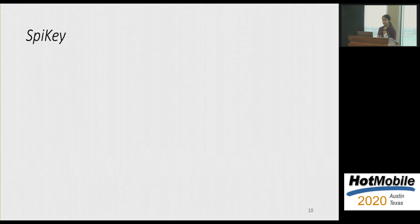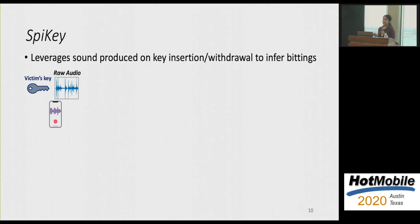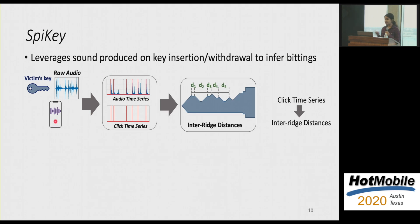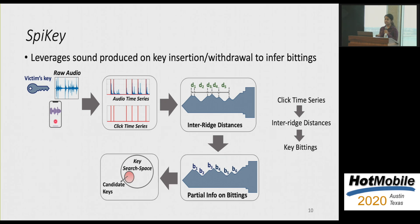So far, I've kind of explained to you how the lock works and what really causes the sound when the key is being inserted. So now we kind of switch gears and show how we can make use of the sound that's being generated to actually infer the secret of the key or the key bittings. So this is where I introduced to you our work, which is SpiKey. So the basic design of SpiKey is as follows. So what you do is you first capture the audio recording of a particular victim's key insertion. And from this, you extract a series of clicks that you can detect on the audio time series. From that, we find out what we call is the distance between ridges, which is the inter-ridge distance of the ridges in the key. And this can kind of give us partial information about the bittings, which are the secrets in the key. With this partial information, we kind of reduce the possible key search space, which ultimately gives us a set of candidate keys, of which one of them corresponds to the victim key, which was initially recorded.